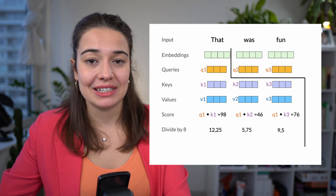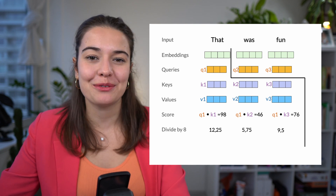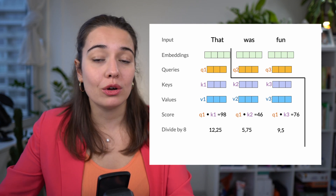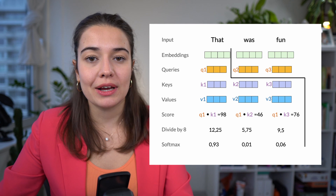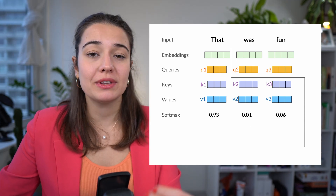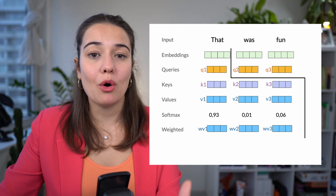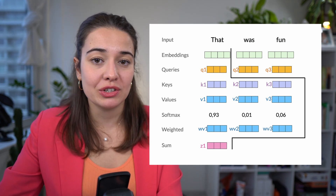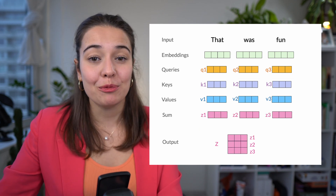Once we have all the scores, we divide them by 8 — which is the square root of 64, and 64 is the dimension of the query, key, and value vectors as used in the original paper. We then pass all these values through a softmax layer to normalize them, so that the scores for one word against all other words sum to one. These softmax outputs serve as weights, which we multiply with all the value vectors of all the words. Finally, we sum up all the weighted value vectors to produce the output of the self-attention layer for that word, and this is done simultaneously for all words.